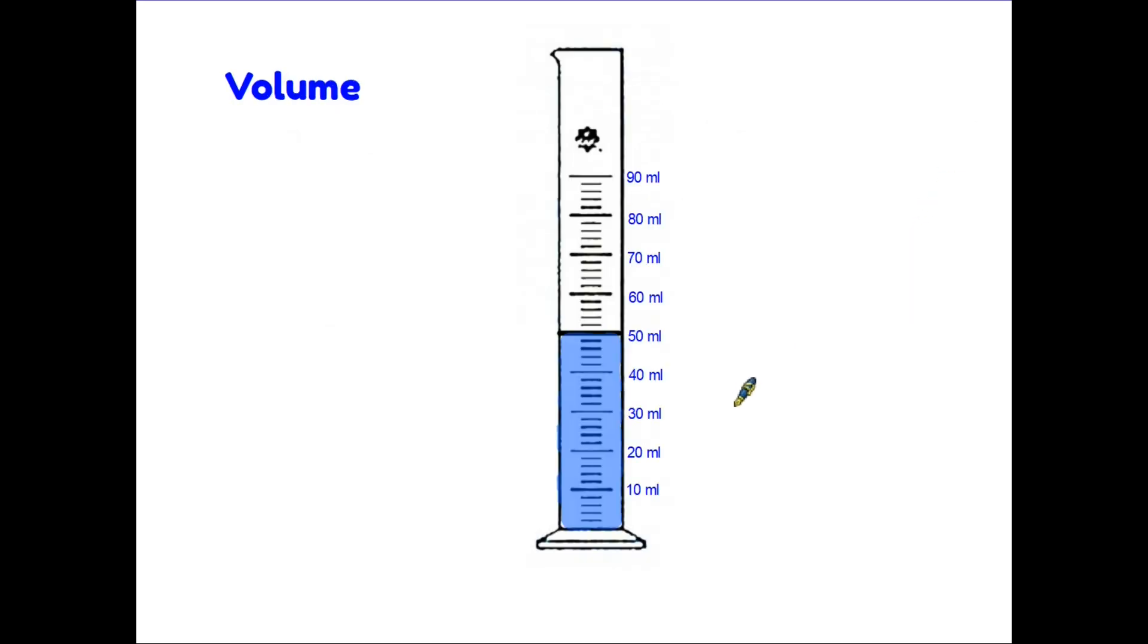Moving on to volume, here we have a measuring container. Now the scale is in a way similar to that that we've just seen on the ruler. But in this case rather than measuring millimetres, it's actually measuring millilitres. Very similar but rather than mm we put ml.